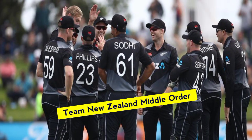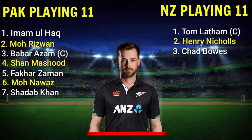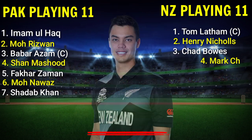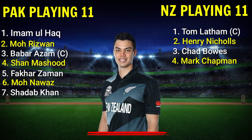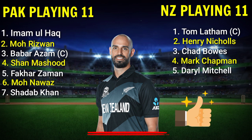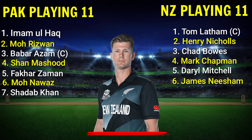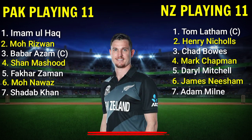Team New Zealand Middle Order: Number 3 Chad Bowes, right-hand batsman. Number 4 Mark Chapman, right-hand batsman. Number 5 Daryl Mitchell, right-hand all-rounder. Number 6 James Neesham, left-arm all-rounder. Number 7 Adam Milne, right-hand all-rounder.